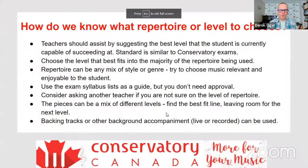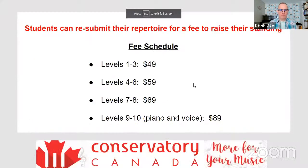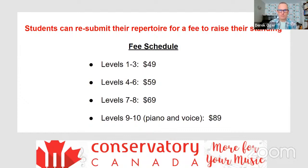Here's the fee schedule — it's about a third of the price of a regular certificate exam. Levels one to three is $49, levels four to six is $59, levels seven and eight is $69, and the higher levels for voice and piano — levels nine and ten — are $89. If students want to resubmit, they can do so for roughly half the fee, simply registering for that in their portal and uploading the three links again.